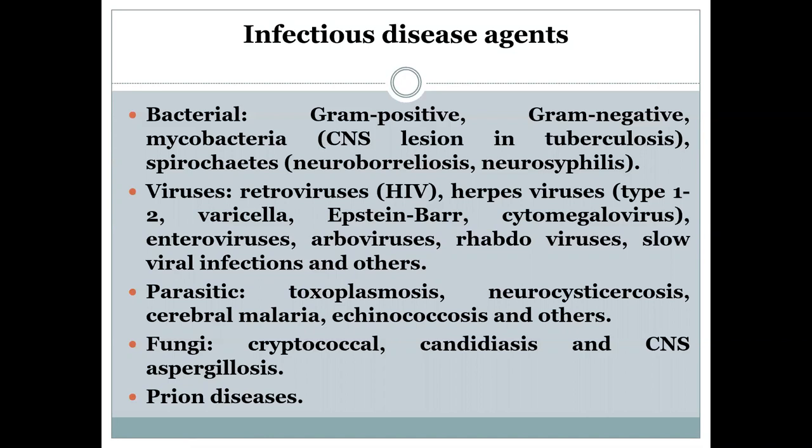The cause of infectious disease of the central nervous system can also be provoked by viruses. The most common ones are retroviruses, human immunodeficiency virus, herpes viruses — usually type 1 and type 2 — as well as varicella, Epstein-Barr, cytomegalovirus, and many others.